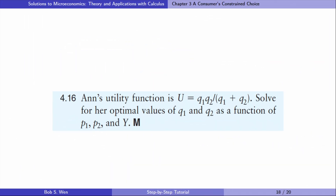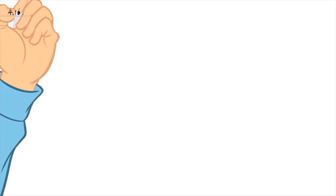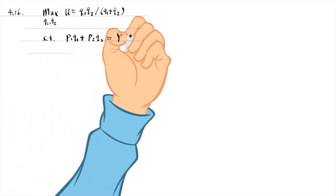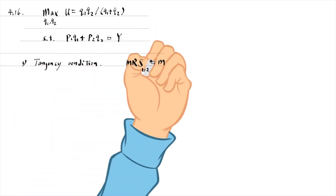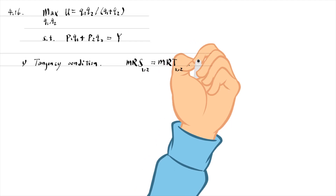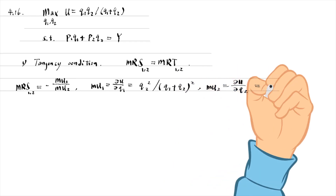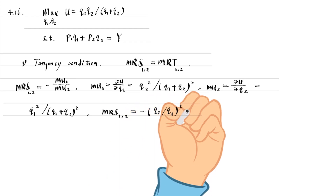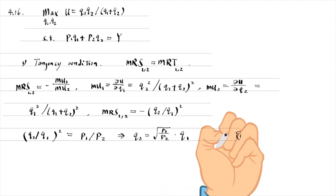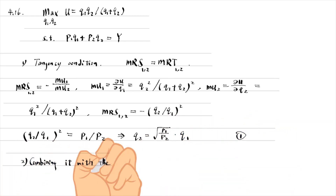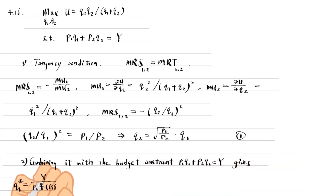Let's do exercise 4.16. Anne's utility function is U equals Q1 times Q2 over the sum of Q1 and Q2. Solve for her optimal values of Q1 and Q2 as a function of P1, P2, and Y. We use the shortcut approach. In the first step, we find the tangency condition equation — at the optimal point, the marginal rate of substitution equals the marginal rate of transformation — to obtain tangency equation 1. In the second step, combining it with the budget constraint gives the solution of the optimal bundle.